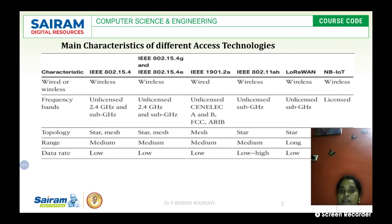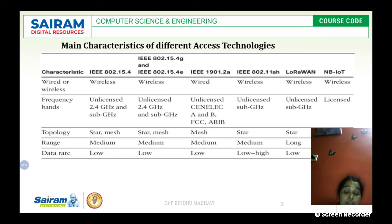Now let's look at the characteristics of different access technologies — characteristics are essentially the features of each technology. We will see various versions of IEEE 802.15.4 in this table, showing a sample of versions with their different characteristics.